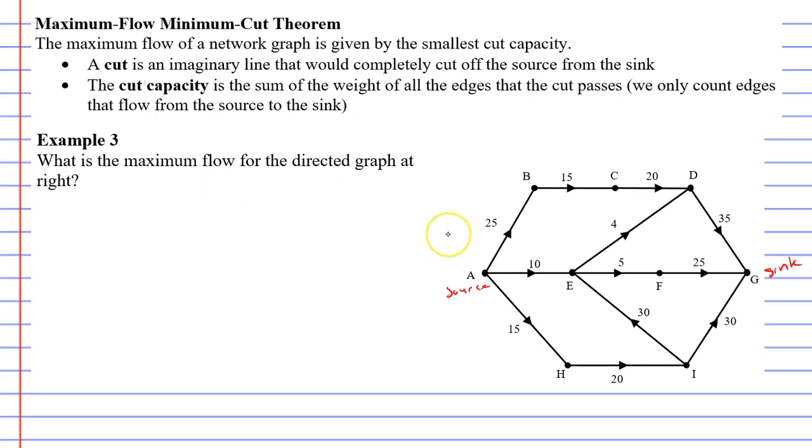So let's make just one cut in red, just a real random cut like so. And I can see that this cut in red separates the source from the sink. What is the cut capacity of this cut? Well, we're just going to add up our weighted edges. 25 plus 10 is 35, plus 15 is 50. So we have a cut capacity of 50.